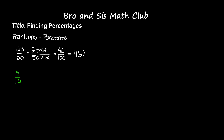Now let's say we have the example 5 out of 10. First, we have to make sure that the denominator is 100, and obviously it's not. So we also have to convert this into 100. We know that 10 times 10 gives us 100. Remember, whatever you do to the denominator, you do the same to the numerator — so 5 times 10 gives us 50. So 50 out of 100 is going to be 50 percent.